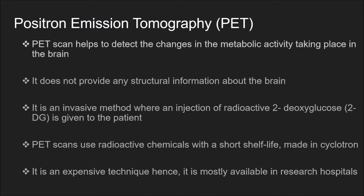Positron emission tomography or PET scans help to detect changes in the metabolic activity taking place in the brain. It does not provide structural information; rather, it provides functional brain images. It is an invasive method where an injection of radioactive 2-deoxyglucose or 2-DG is given to the patient. When absorbed, the patient is given a task, and recordings are made while doing the task. The images show which part of the brain was actively involved.